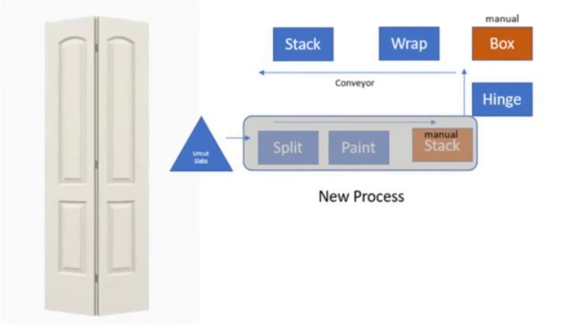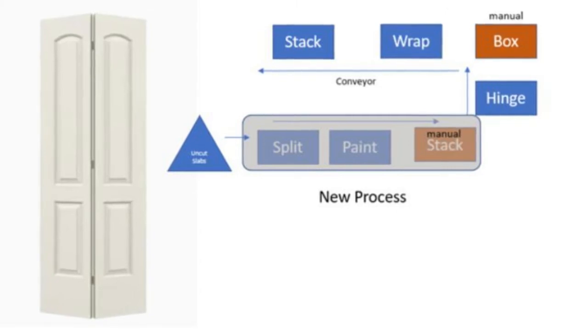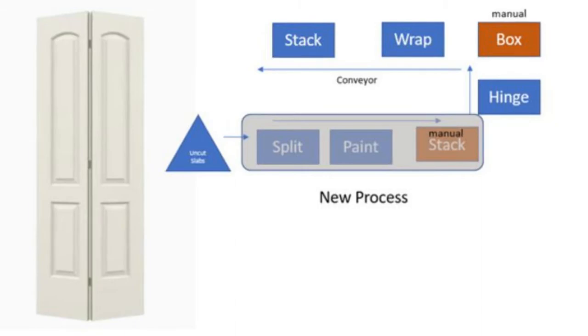However, the new splitting and paint processes had a longer cycle time than the rest of the cell and created a bottleneck. Our team was tasked with optimizing the cell for one-piece flow with the goal of increasing throughput to match customer demand.